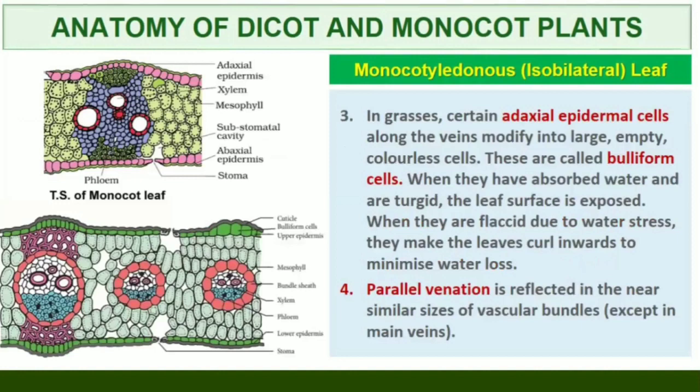In grasses, certain adaxial epidermal cells along the veins modify themselves into large, empty, colorless cells called bulliform cells. When bulliform cells have absorbed water and are turgid, the leaf surface is exposed. When they are flaccid due to water stress, they make the leaves curl inwards to minimize water loss. The parallel venation in monocot leaves is reflected in the near-similar sizes of vascular bundles, except in main veins, as seen in vertical sections of the leaves.